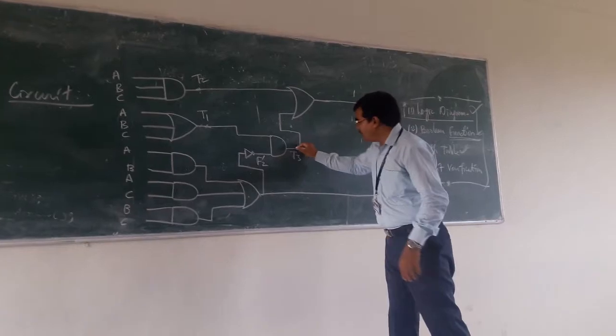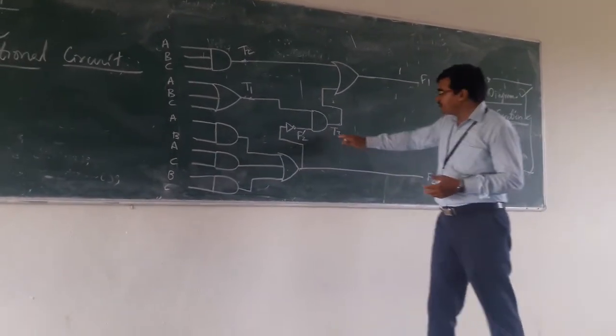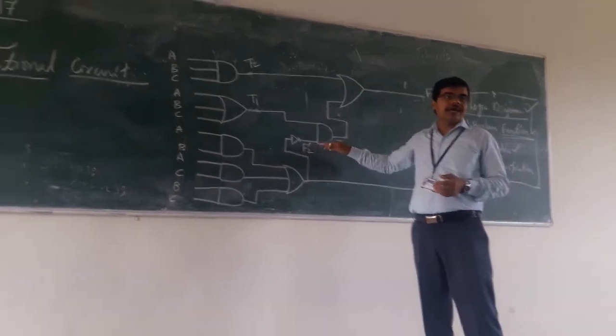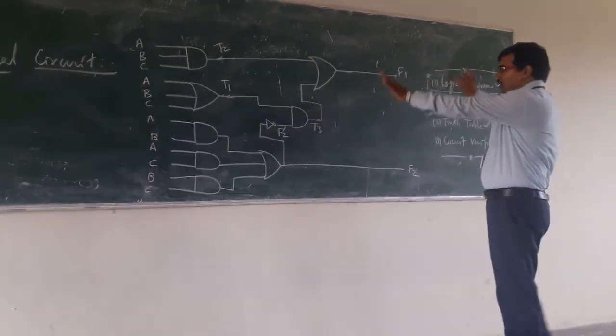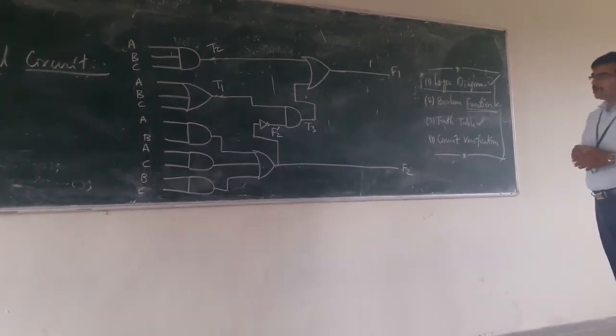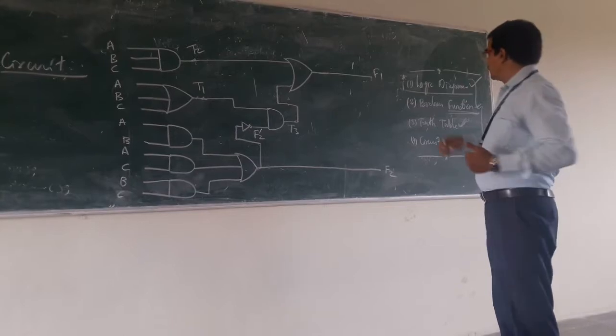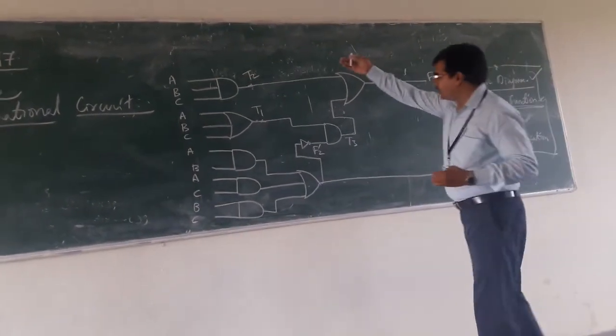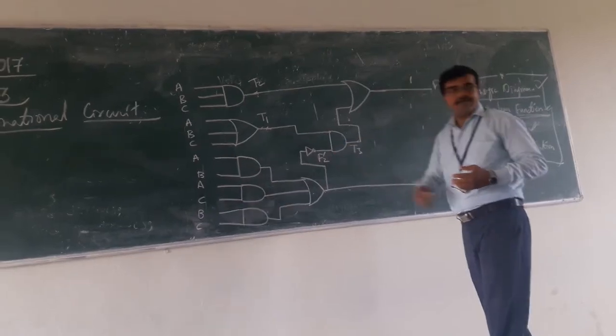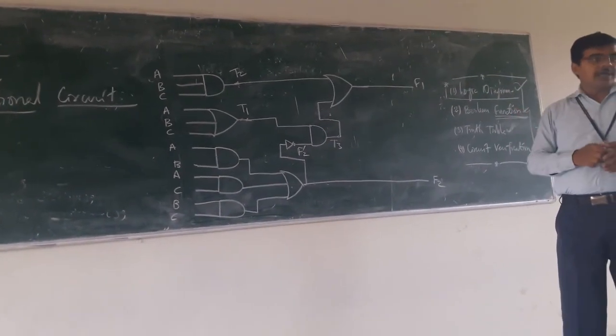Similarly, you are having T3 and F2 dash. These are also intermediate points. So if you are seeing your logic diagram, you are having A, B, and C as input; F1 and F2 as output; and T1, T2, T3, and F2 dash as intermediate points in the logic diagram.